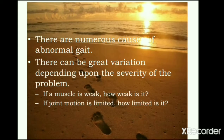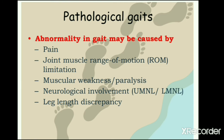There are numerous causes of abnormal gait. There can be great variation depending upon the severity of the problem — if the muscle is weak, how weak is it? If the joint motion is limited, how limited is it? The causes for abnormal gait are: first, pain; second, joint and muscle range of motion limitation; third, muscle weakness; fourth, neurological involvement; and fifth, leg length discrepancy.